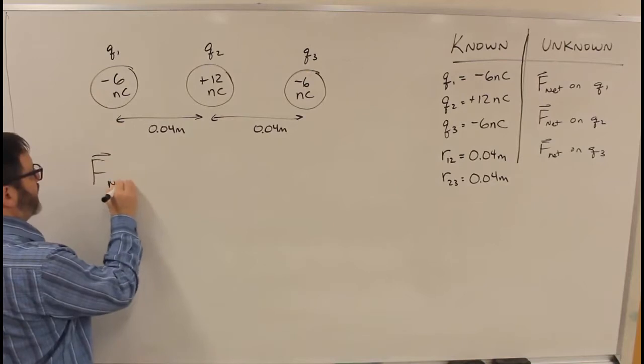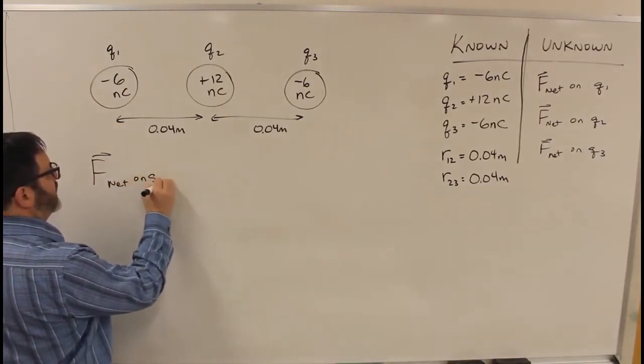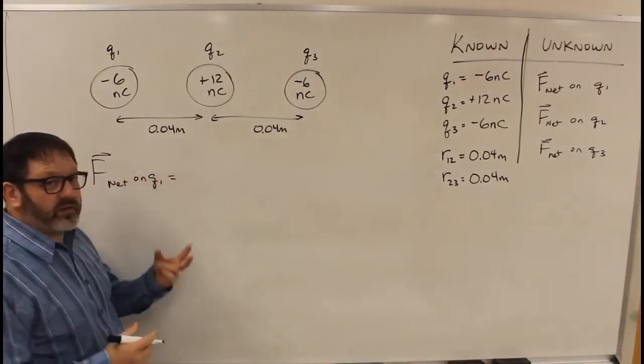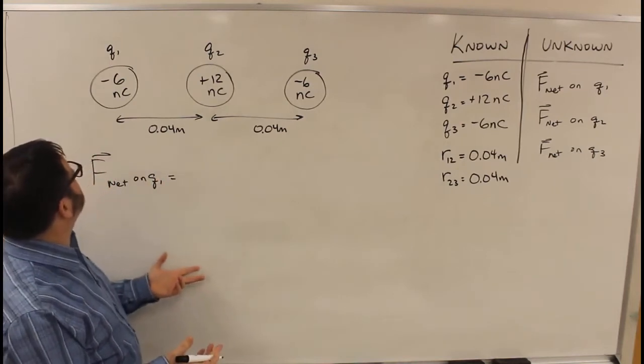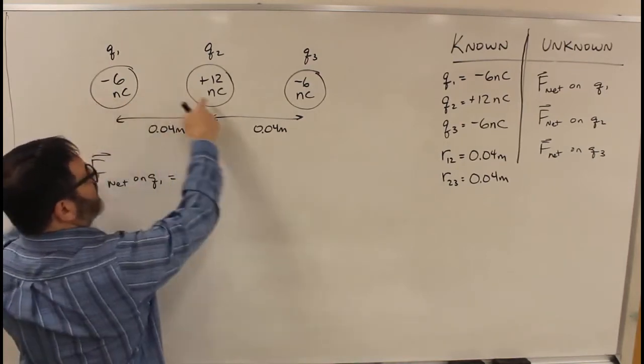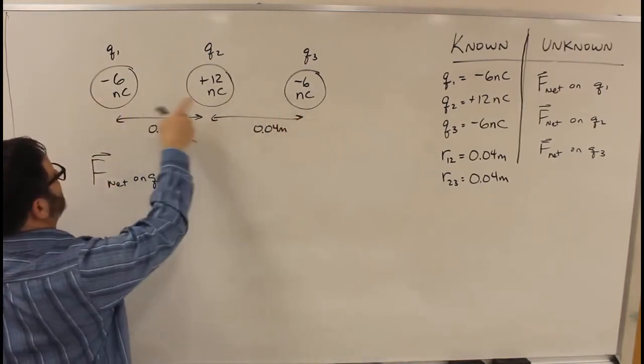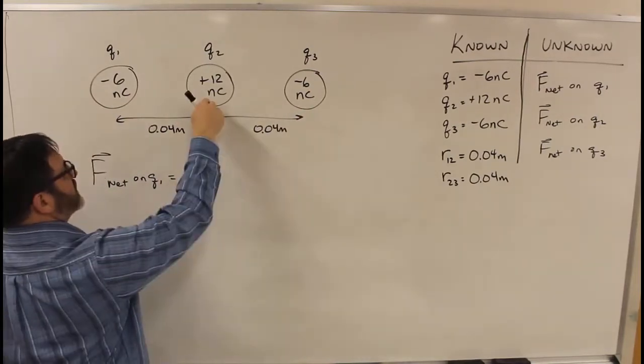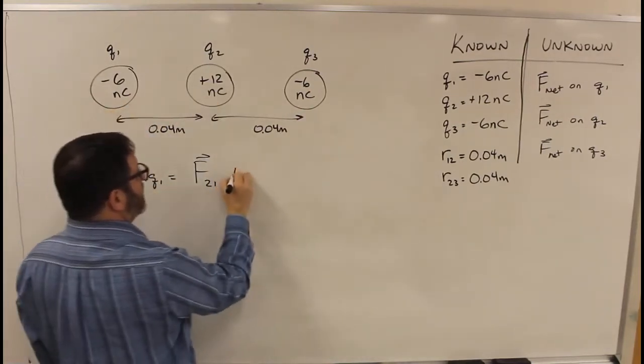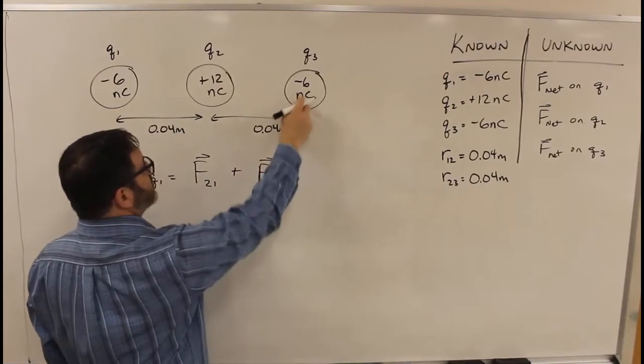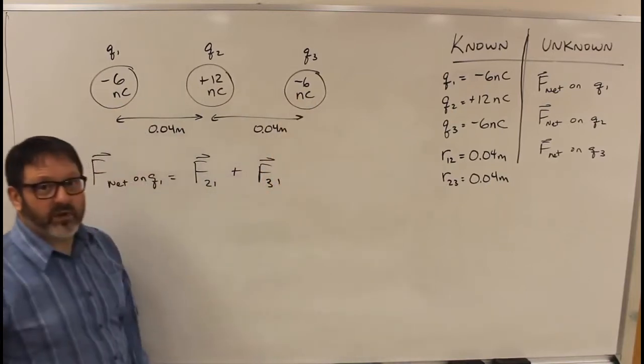So F net on Q1 is, well, there are two things in the universe that can cause a force on it. These are the only three things that exist. So it will have to be the force of charge 2 on charge 1 plus the force of charge 3 on charge 1.